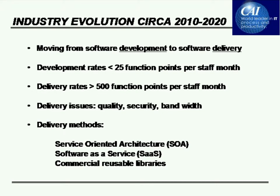The industry itself is changing, and some of those changes need to be measured. We are moving from the concept of developing software features to delivering them. When you consider software as a service, service-oriented architecture, cloud computing, or Google applications available online, you're no longer going to be developing as much as in the past. You'll be assembling pieces in the form of software as a service or cloud computing — pieces that may already exist. We need to measure not only development, which typically has productivity rates of less than 25 function points per staff month, but also delivery of applications constructed from large volumes of reusable components, which might be more than 500 function points per staff month. We also need to deal with other delivery issues such as quality, security, and bandwidth.